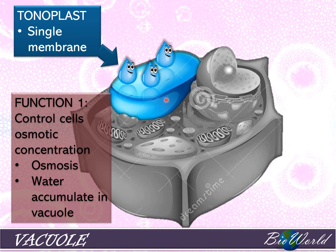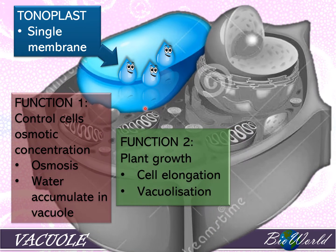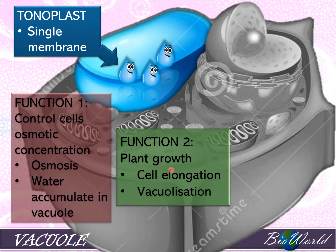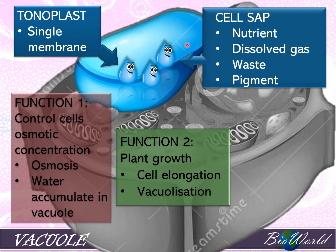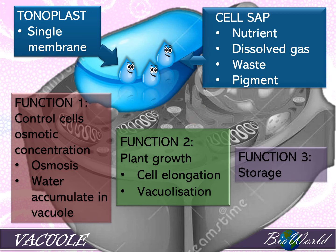Once the cell becomes turgid due to osmosis, the vacuole helps carry out its second function — plant growth. The turgor pressure within the cell can help young plant cells elongate through a process known as vacuolization, and as the plant cells elongate, the plant grows. The liquid within the vacuole, called the cell sap, can store nutrients, dissolved gases, waste, as well as pigment. This enables the vacuole to carry out its third function: storage.